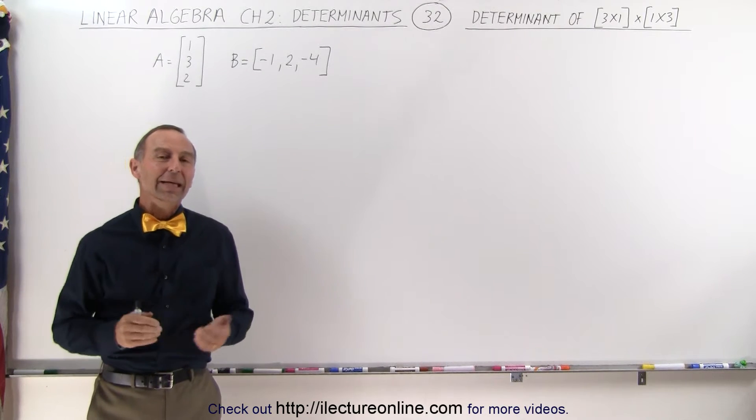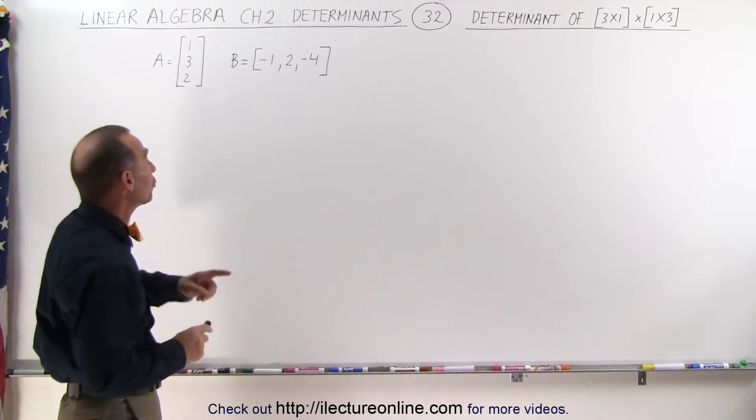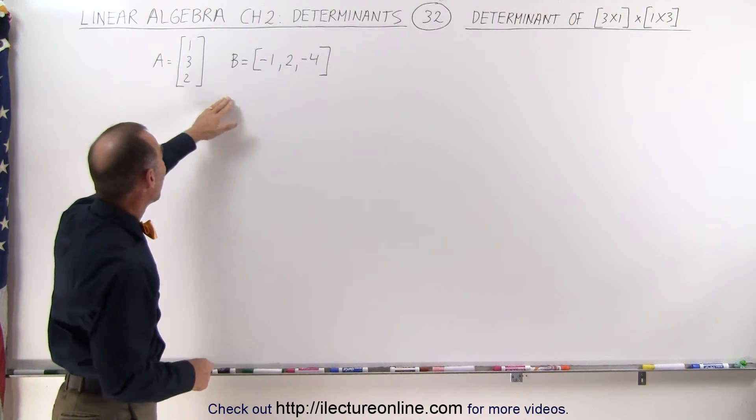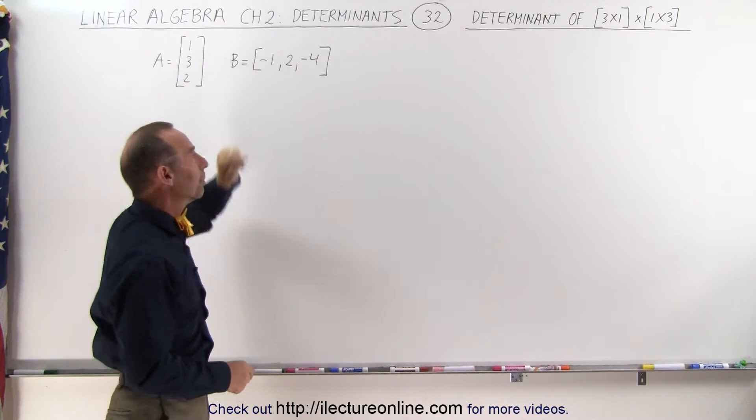Welcome to our lecture online. Here we're going to show you what happens when you take the determinant of the product of two matrices A and B when the first matrix is a 3 by 1 and the second matrix is a 1 by 3.